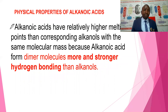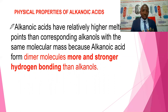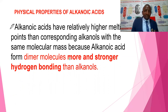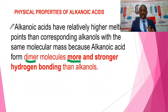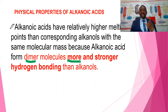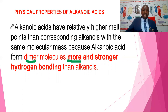Alkanoic acids have a relatively higher boiling point than the corresponding alkanes with the same molecular mass because alkanoic acids form dimer molecules. Therefore, they have more hydrogen bonding than alkanol. Each molecule of alkanoic acid is made up of two molecules — a dimer — while alkanol is made up of one. So for every molecule of alkanol there will be one hydrogen bond, but for every molecule of alkanoic acid there will be two instances of hydrogen bonding, giving alkanoic acid a higher boiling point.